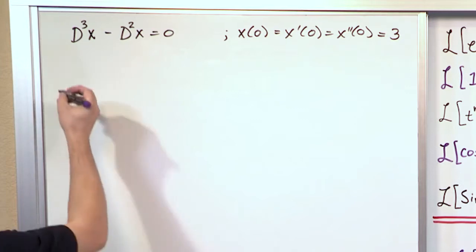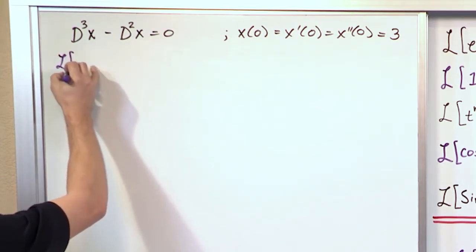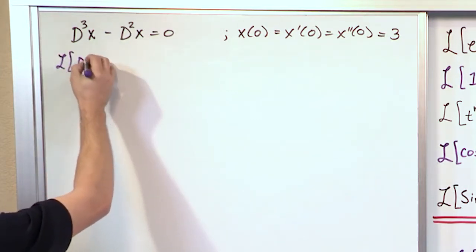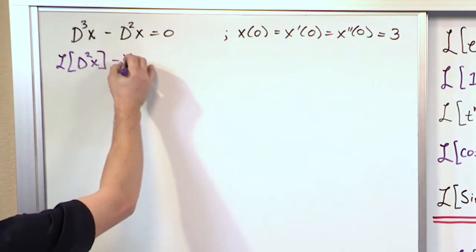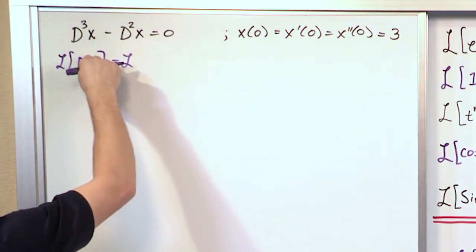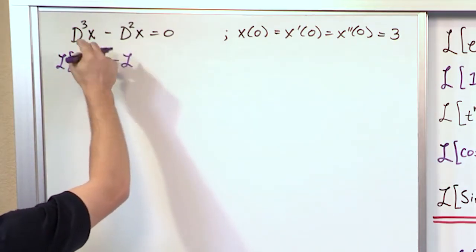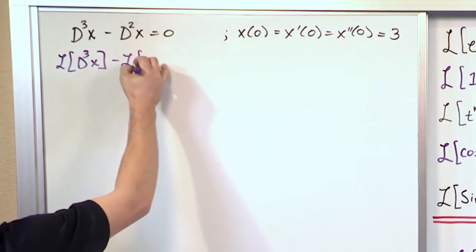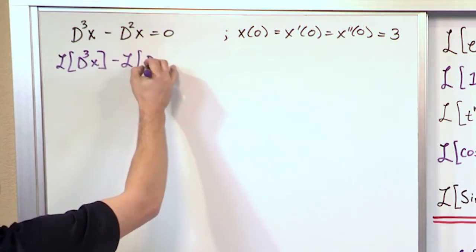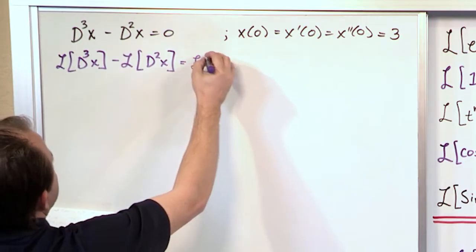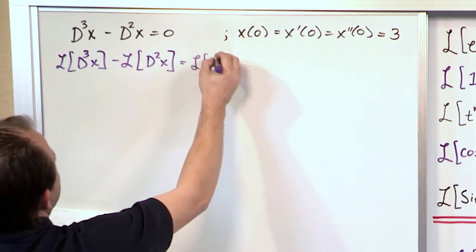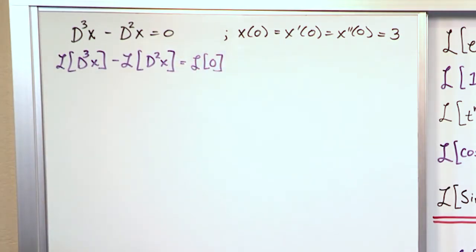So we apply the same approach. We're going to take the Laplace Transform of everything separately. We'll have the Laplace Transform of the third derivative, the Laplace Transform of the second derivative, and on the right-hand side we'll take the Laplace Transform of 0. We're just applying the Laplace Transform to each and every term.